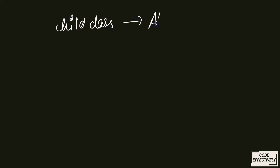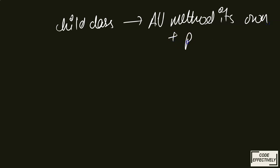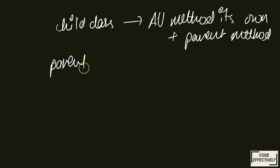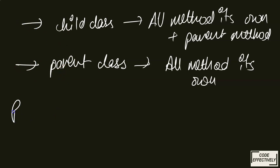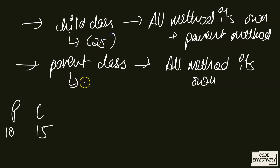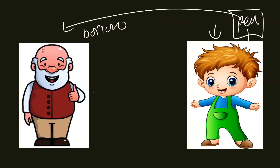In summary: a child class gets all methods of its own plus all methods of its parent class. But the parent class gets only its own methods — it cannot access the child class's methods. For example, if the parent class has 10 methods and the child class has 15 methods, the child can access 25 total, but the parent can only access its own 10.